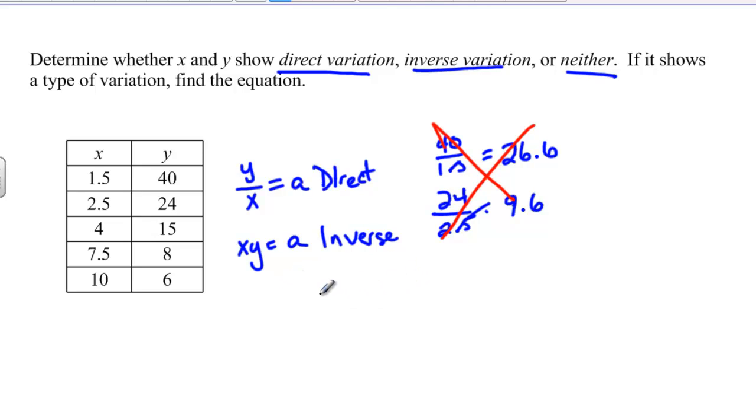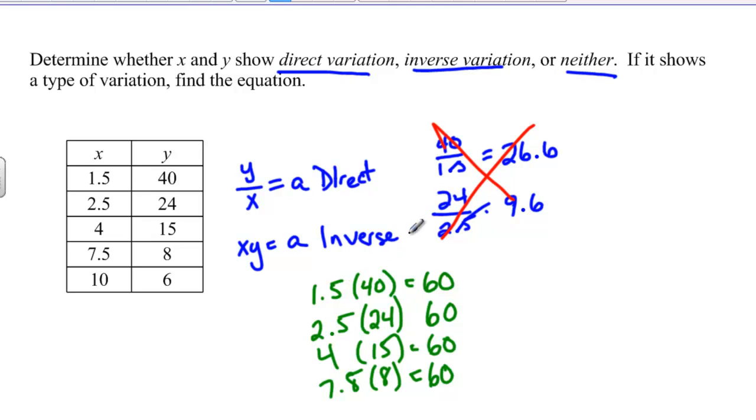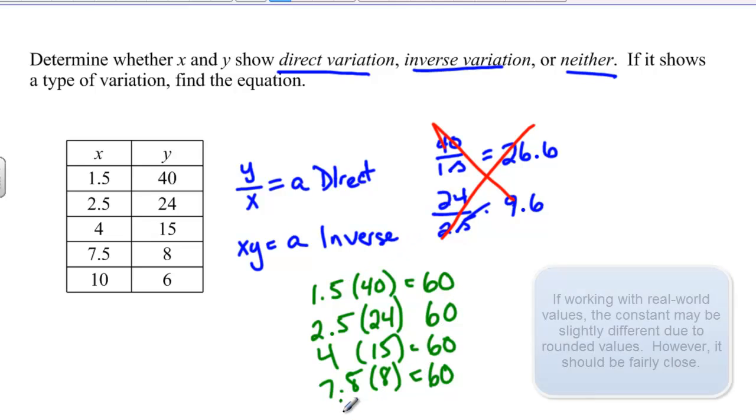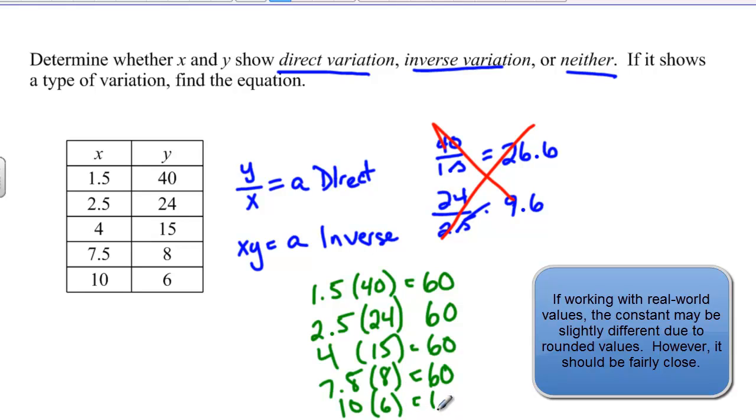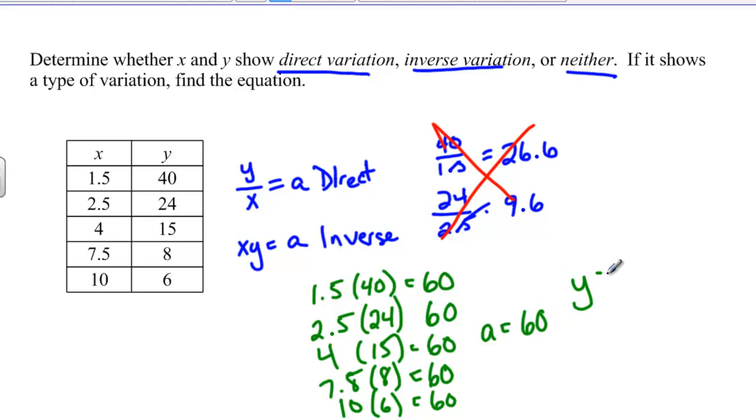Now let's check to see if it means inverse variation. If I do 1.5 times 40, I actually get 60. If I do 2.5 times 24, I also get 60. And if I do 4 times 15, I also get 60. And then if I do 7.5 times 8, I also get 60. So I think you can see that the common constant here, and 10 times 6 just for good measure is also 60. So I think you can see that a equals 60.